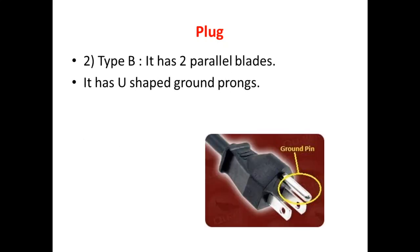Type B has two parallel blades and a U-shaped ground prong. The ground pin helps to ground the device before the power is connected.